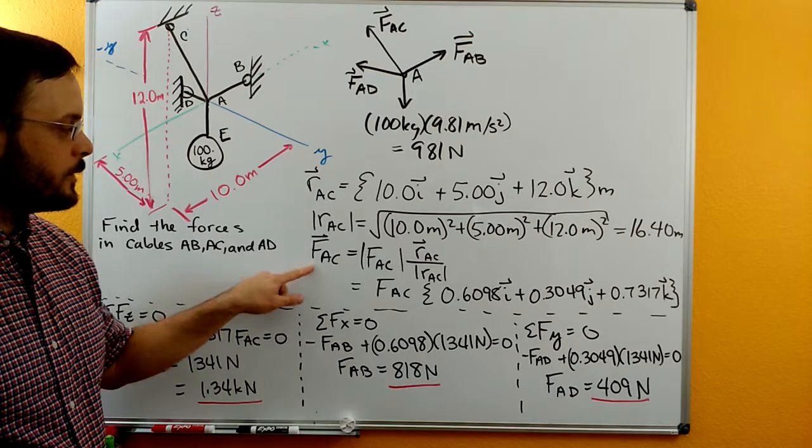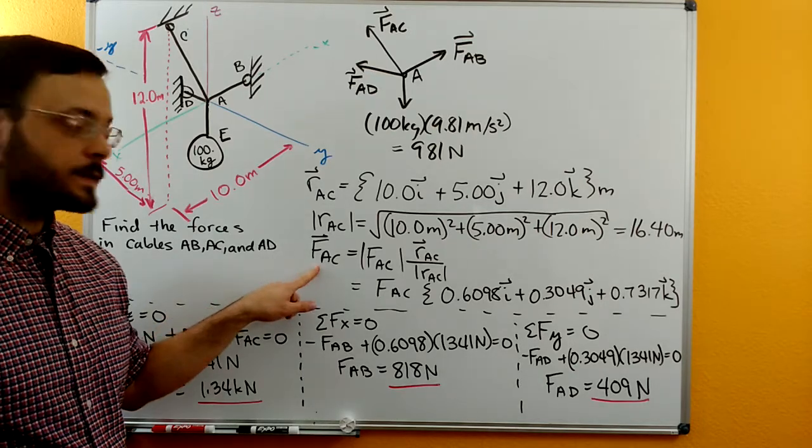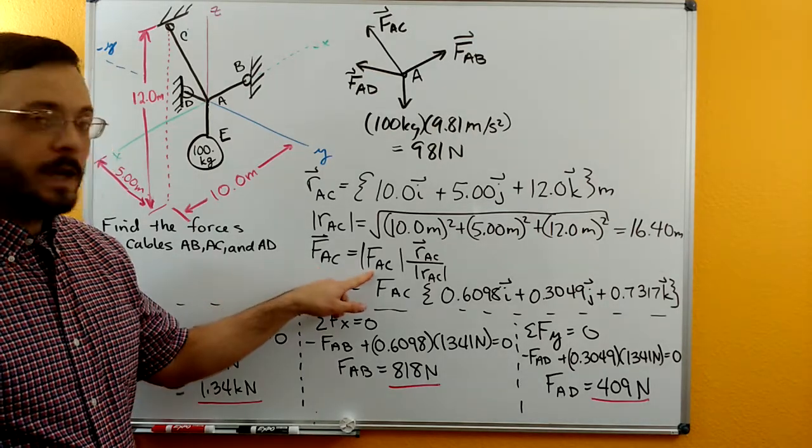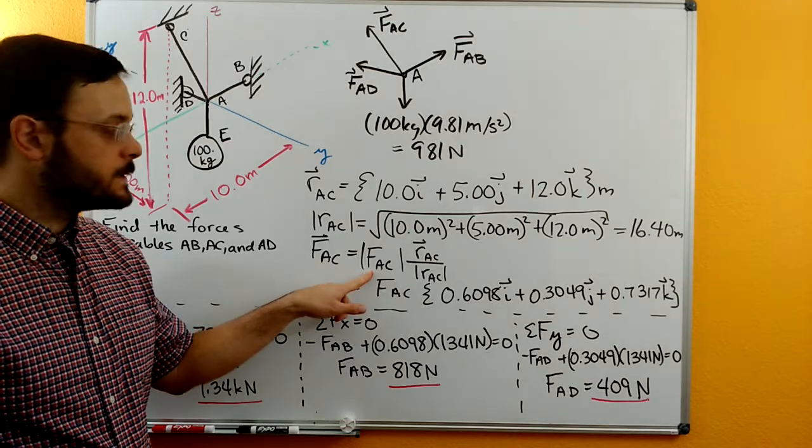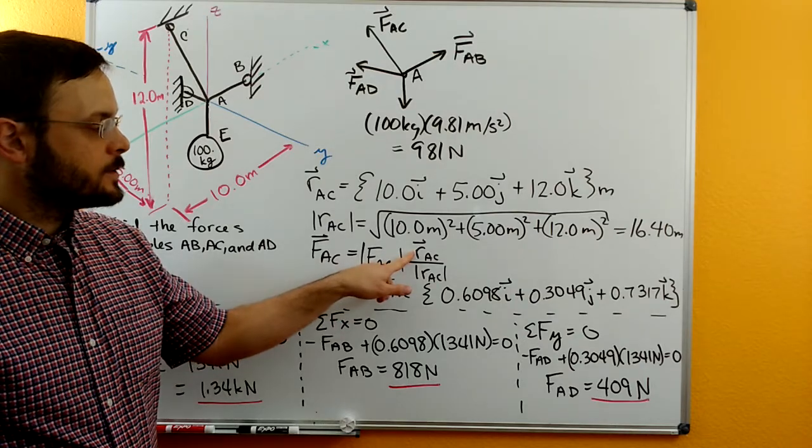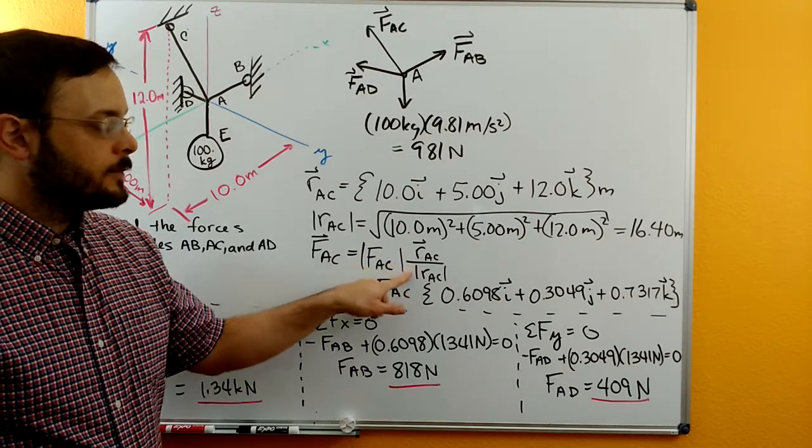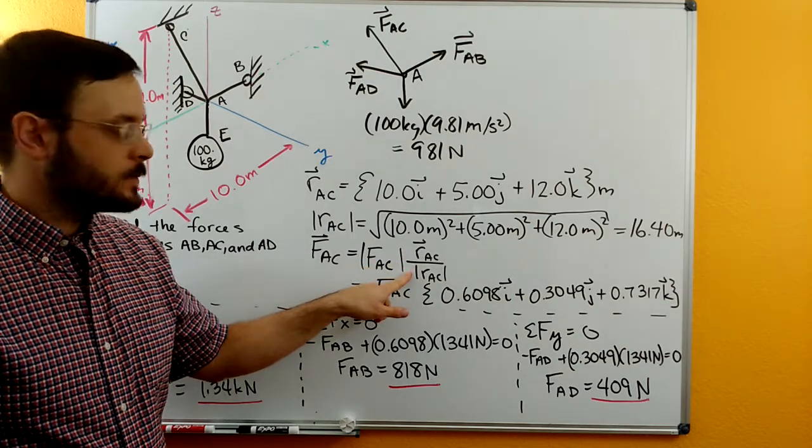Now we can develop our force vector. So our force vector is going to be its correct magnitude, which is an unknown still, but we can just add in magnitude of FAC times our position vector, RAC, divided by the magnitude of our position vector, RAC.